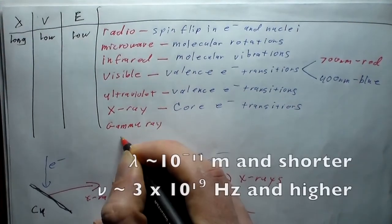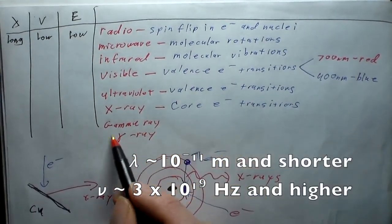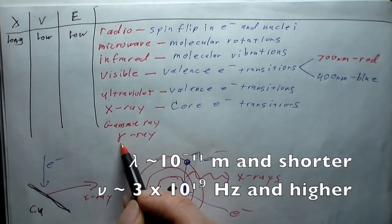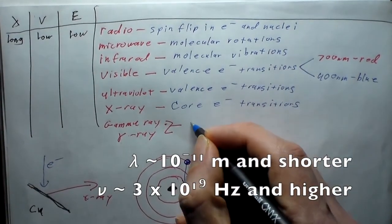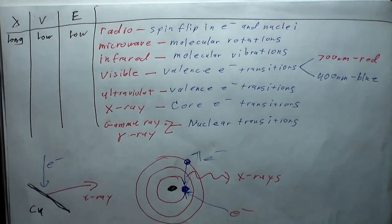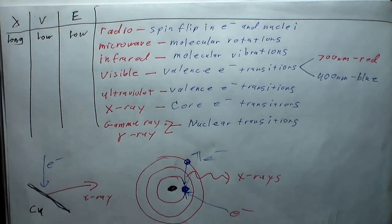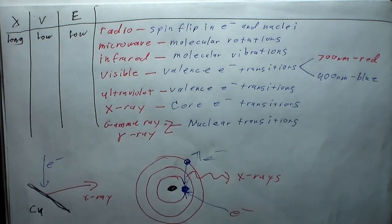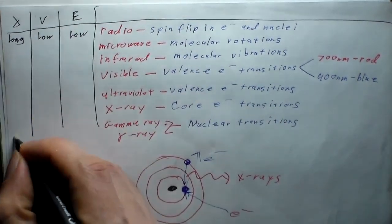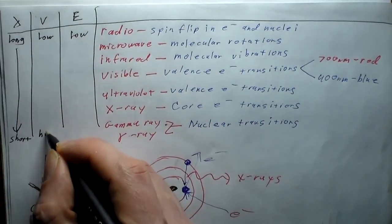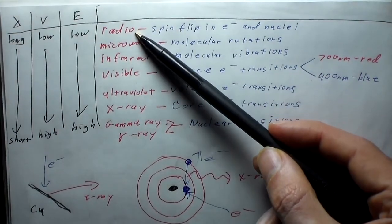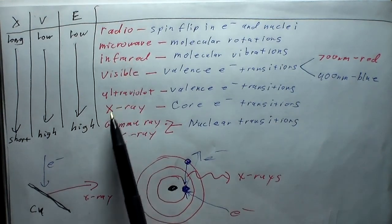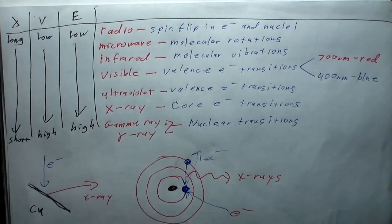Finally we have gamma rays — also written with the Greek letter gamma. These are nuclear transitions. When there's a radioactive decay and you go from one isotope to another, there's some energy left over that must be released, and that comes off as gamma rays. Gamma rays will not turn you into the Hulk — they'll probably just give you cancer. To summarize: starting from radio waves at the lowest energies, you go microwave, infrared, visible, ultraviolet, X-rays, gamma rays — that's the electromagnetic spectrum.